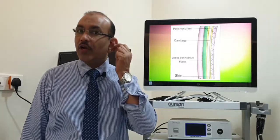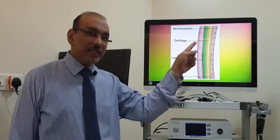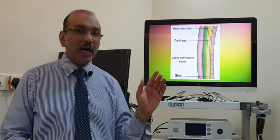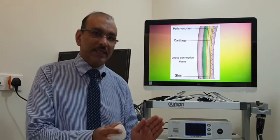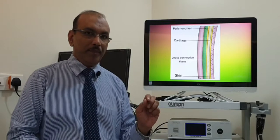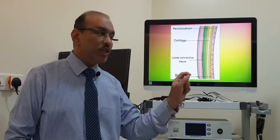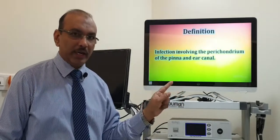Perichondritis. This part of the ear is called the pinna. If you take a cross section of the pinna, it will look like this. The center light yellow color is the cartilage. The cartilage has a covering on both sides, which is called the perichondrium. When there is infection of this perichondrium, it is called perichondritis.